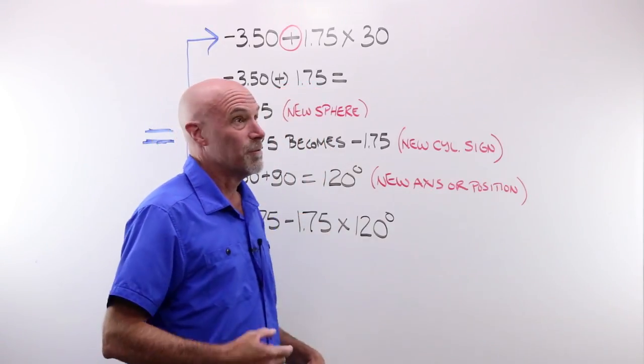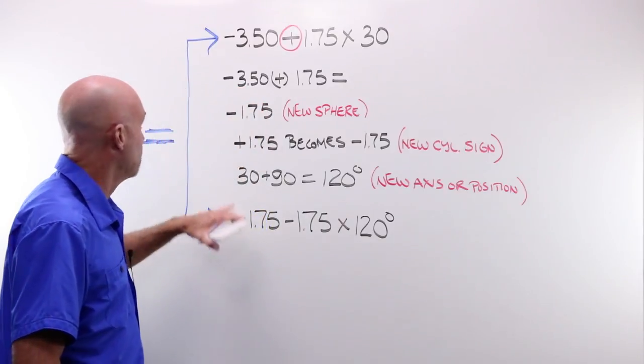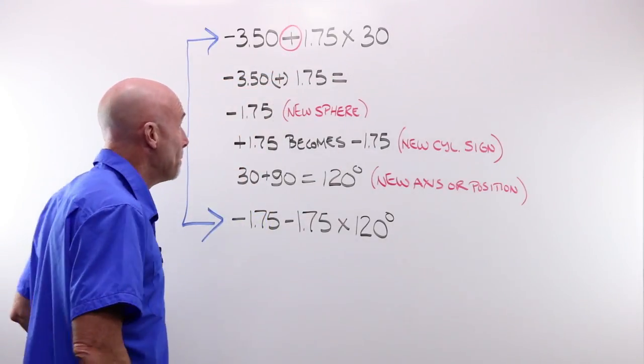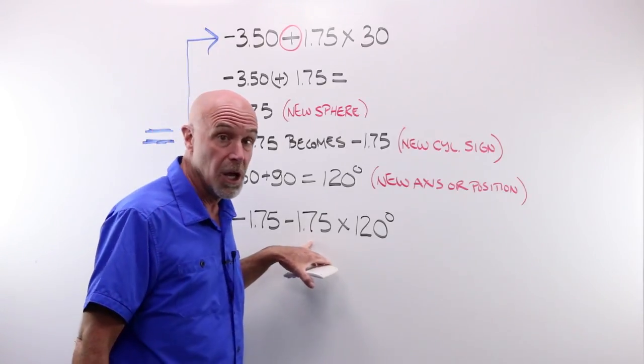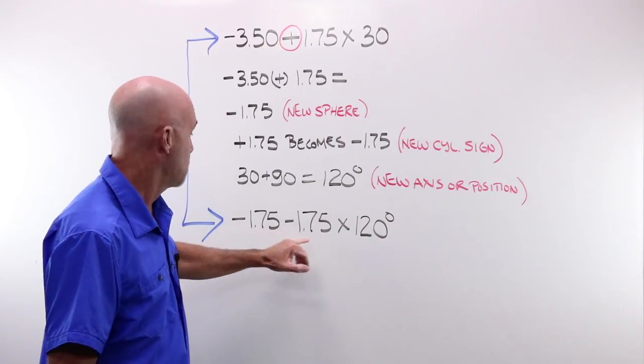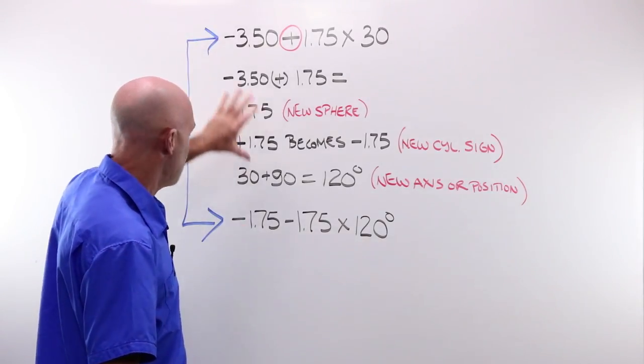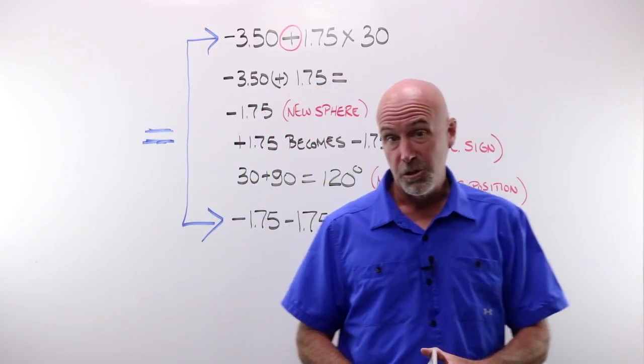My minus 3.50 plus 1.75 at 30 becomes minus 1.75 minus 1.75 at 120. And of course, you could work that backwards, forwards, double-check yourself, make sure everything makes sense, and you are good to go.